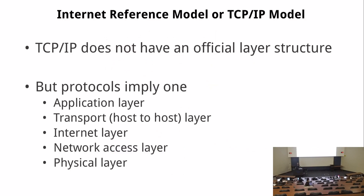The TCP/IP suite doesn't define an official layer structure, but the protocols imply four or five layers. From bottom to top: the physical/data link layer (also called the network access layer), the internet layer (IP), the transport layer (TCP and UDP), and the application layer. In the next two to three weeks we will talk about attacks and defenses at different layers, using cryptographic tools we've already learned to secure those protocols.